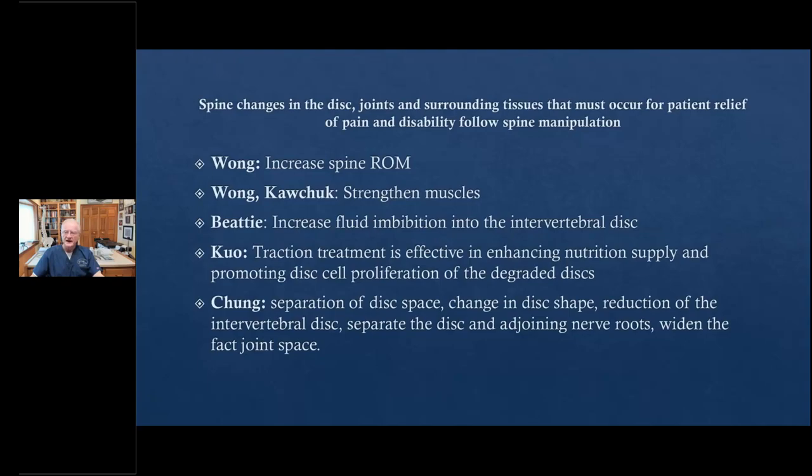And then I'd like to ask you, what are the things that must happen when you and I treat a spine in order for the patient to show a positive outcome? That is relief of two things, pain and disability. When you and I perform a spinal manipulation, in this case, Cox technique. Number one, Wong wrote, and all of these papers are referenced for you. Wong says you must increase the physiological range of motion, which he said was reducing spine stiffness.